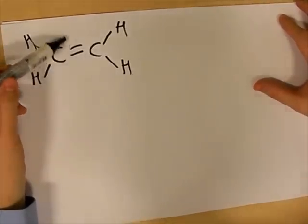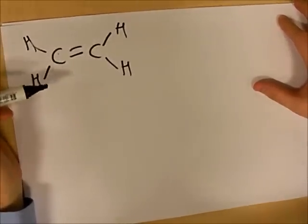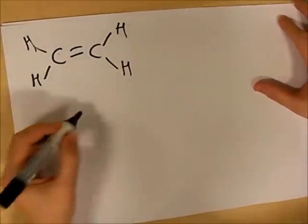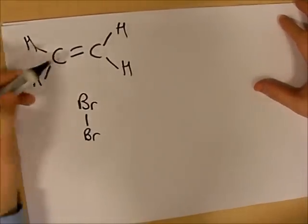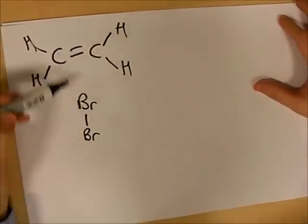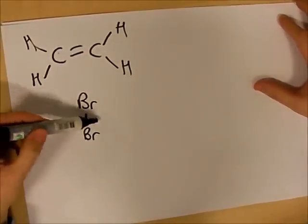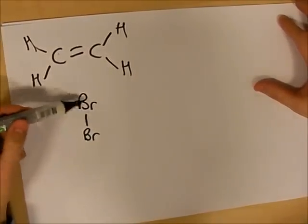The double bond in an ethene molecule is electron rich because it contains four electrons. When a bromine molecule approaches that double bond, because it's very electron rich it will repel the electrons in the covalent bond between the bromine molecules.